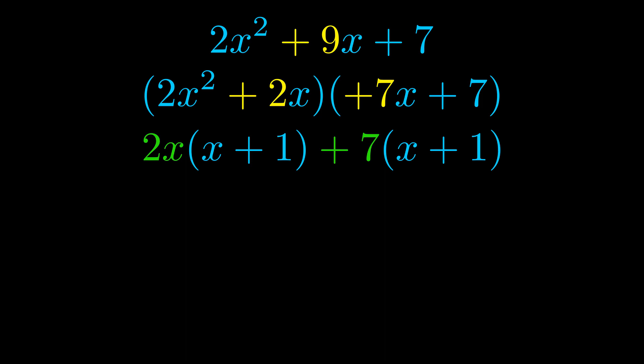Notice also how what remains inside of the parentheses is the same in both cases. The blue values are the same. Those blue values will become one of our factors and we will combine the two green values, the GCFs that we pulled out, to get the other one. And that is our fully factored equation.